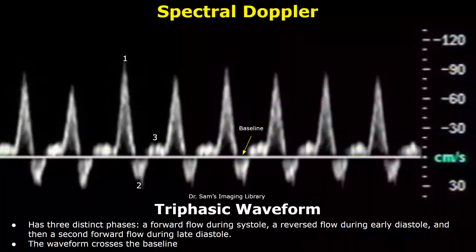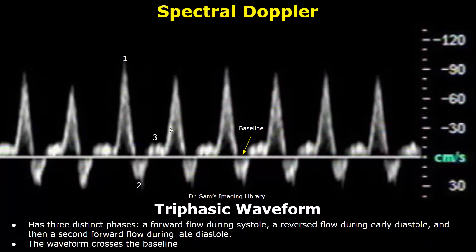In a triphasic waveform you will find three distinct components. The first component will be forward flow during systole, then a reversed flow during early diastole will be the second component, and the third component will be the forward flow during late diastole. So we see three components, therefore it is a triphasic waveform.